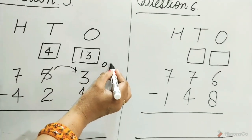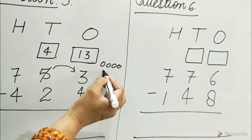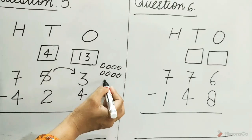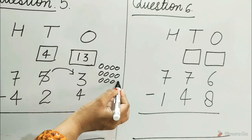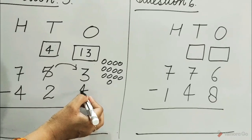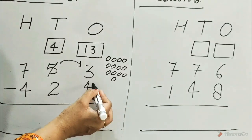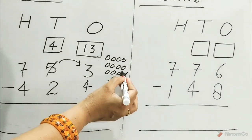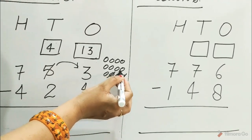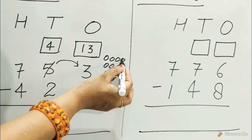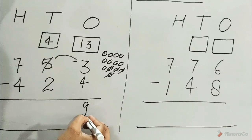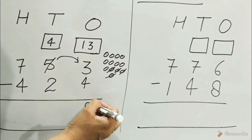Draw 13 circles: 1 through 13. And cut 4 circles from the 13 circles: 1, 2, 3, 4. Count all the remaining circles: 1, 2, 3, 4, 5, 6, 7, 8, 9. Write 9 under the ones column.